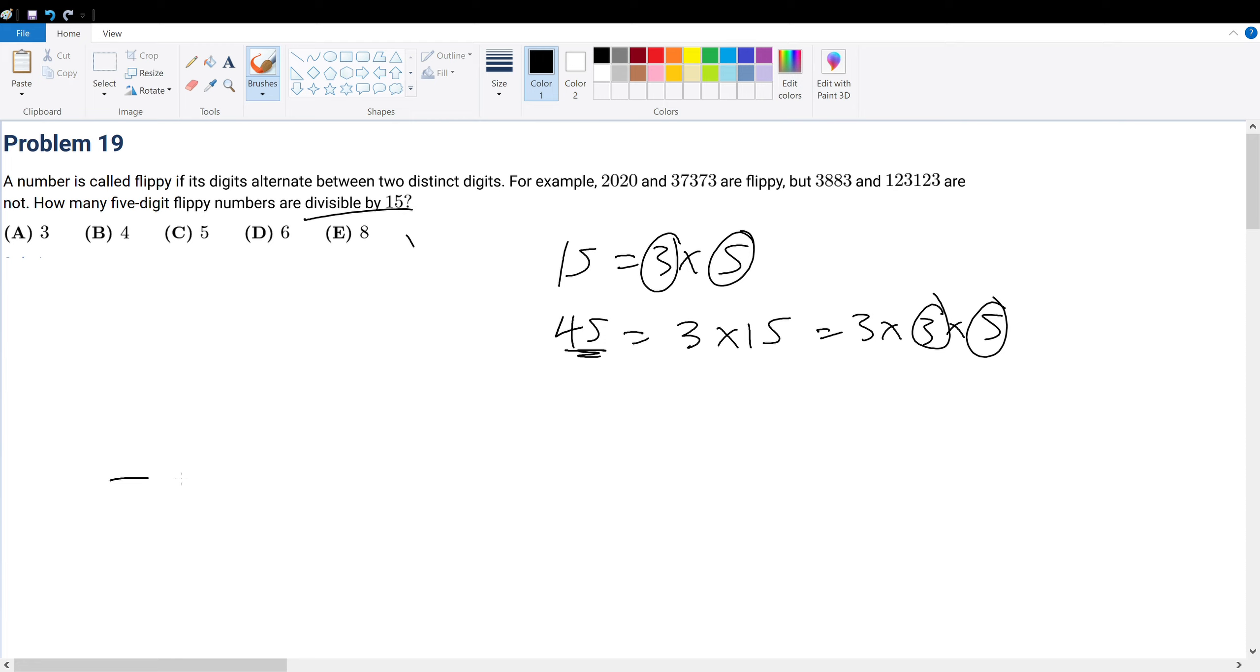This is a five-digit alternating number, and it must be divisible by both 3 and 5. The divisibility rule for 5 is that the units digit must be either 0 or 5. So there are two cases: we can have it end in 0 or end in 5.